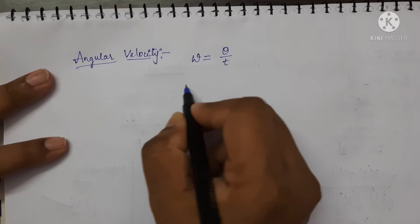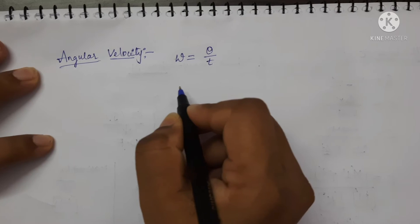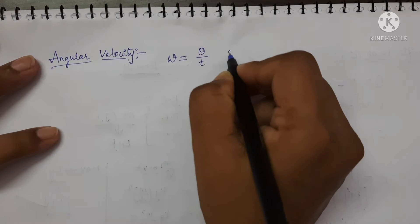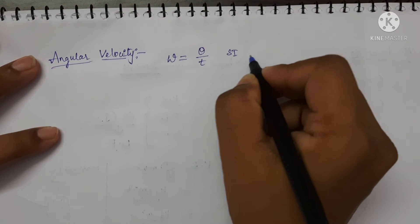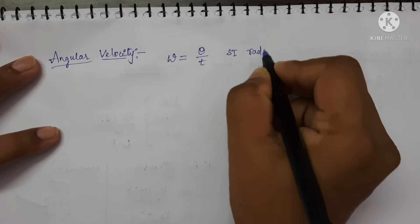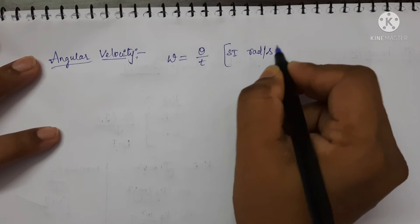Now, write the SI unit and the dimensions. SI unit of angular velocity is radian per second. This is the SI unit.